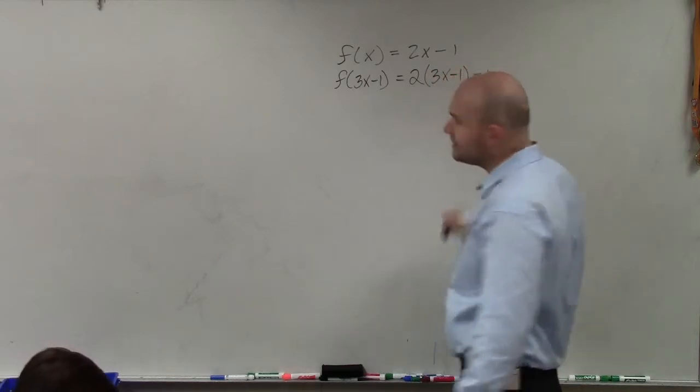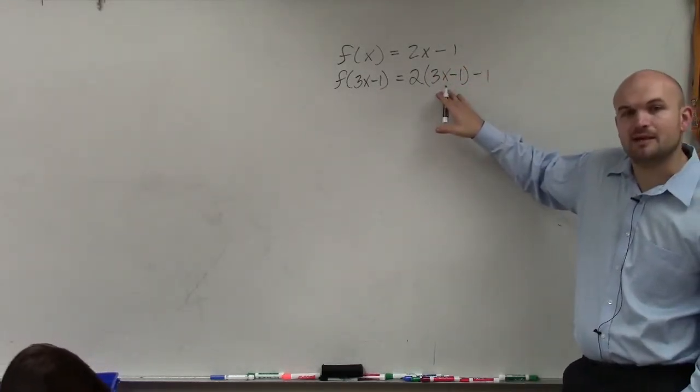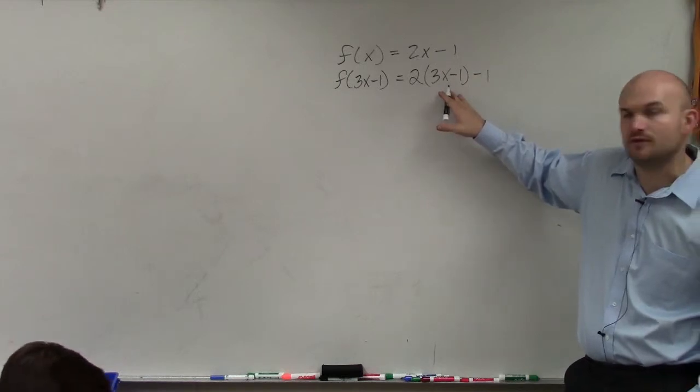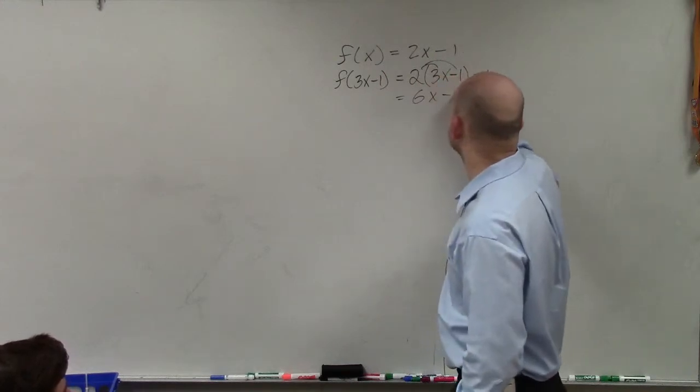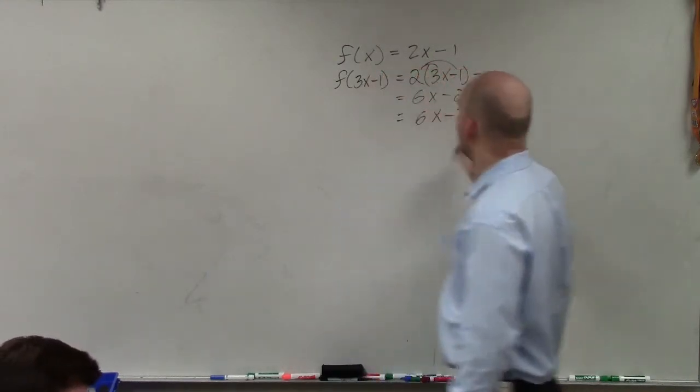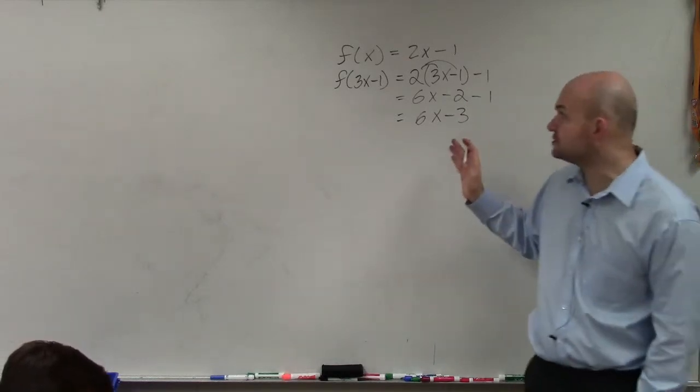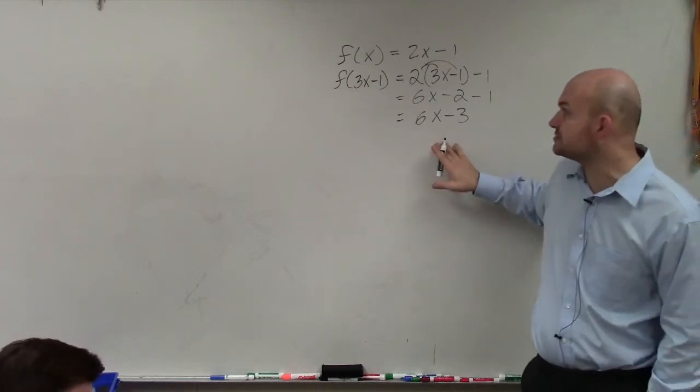Notice that I'm using parentheses here to represent that I'm plugging one value in for the other. Apply the distributive property, and then the value of my function at 3x minus 1 is going to equal 6x minus 3.